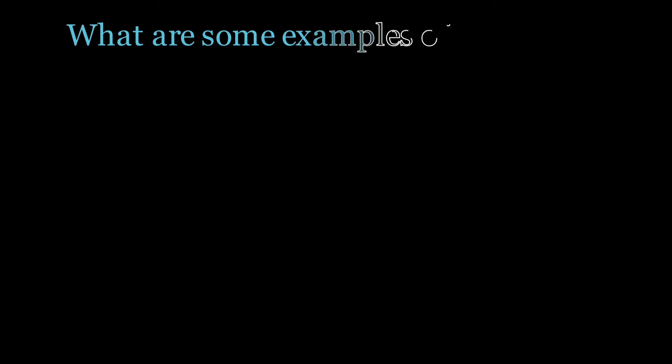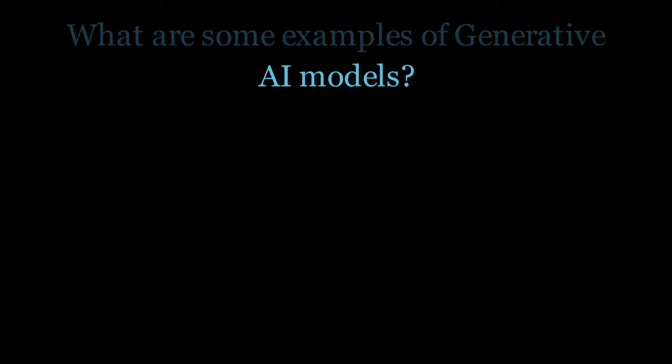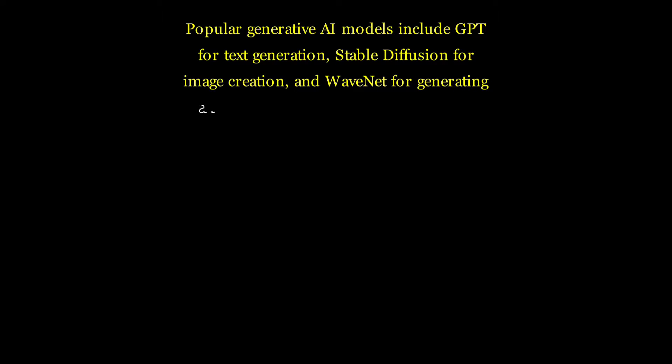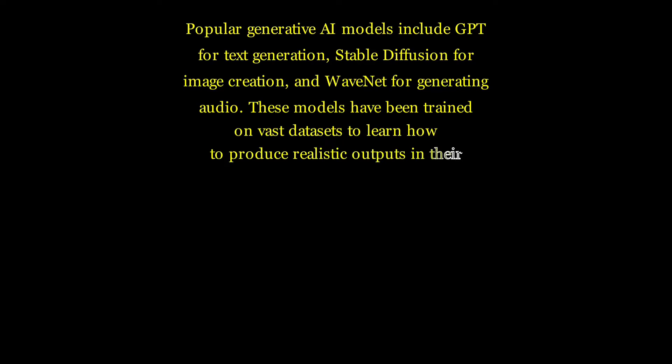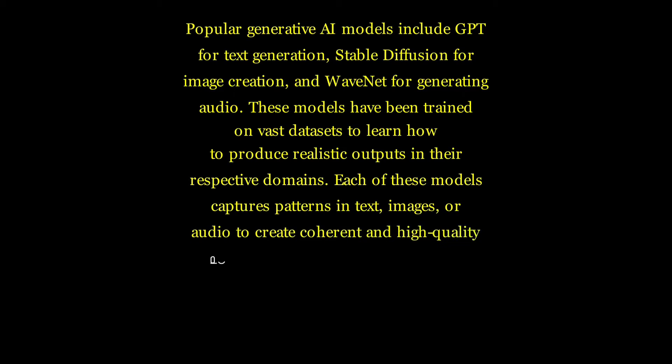What are some examples of generative AI models? Popular generative AI models include GPT for text generation, stable diffusion for image creation, and WaveNet for generating audio. These models have been trained on vast datasets to learn how to produce realistic outputs in their respective domains. Each of these models captures patterns in text, images, or audio in order to create coherent, high-quality new examples, often used in content creation and interactive applications.